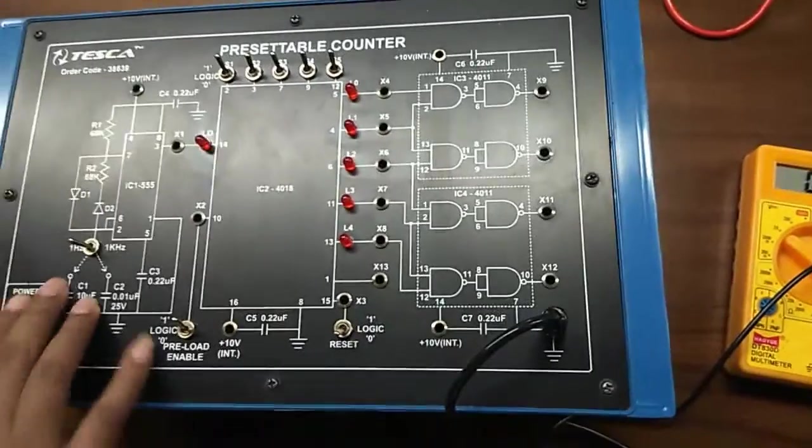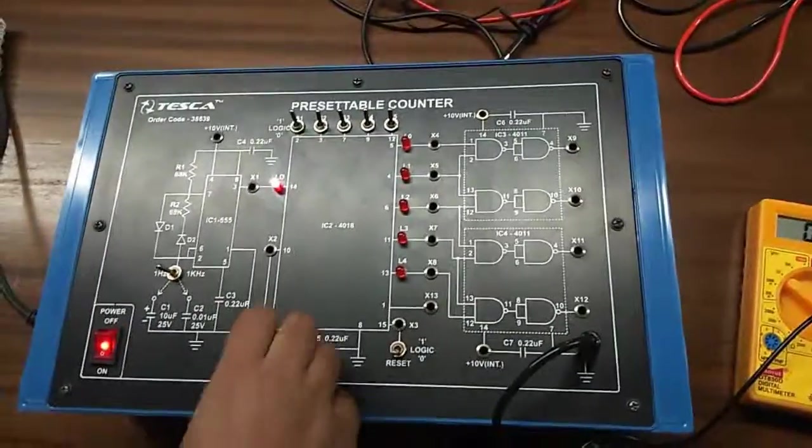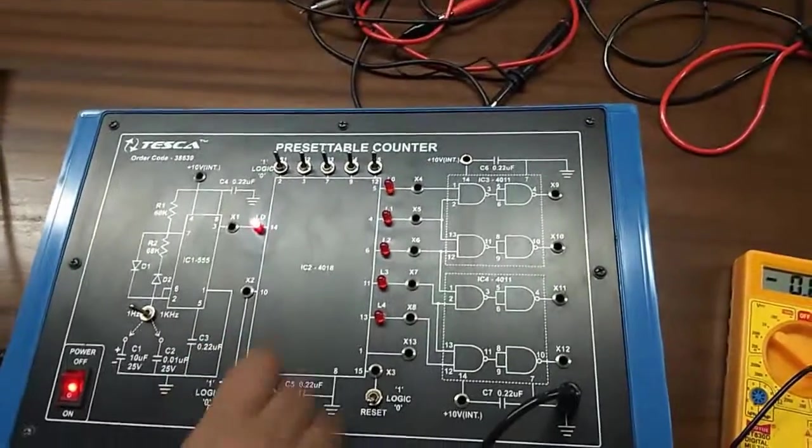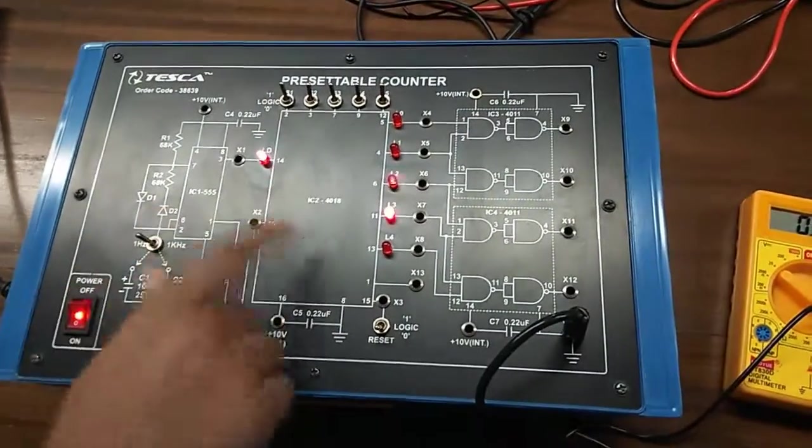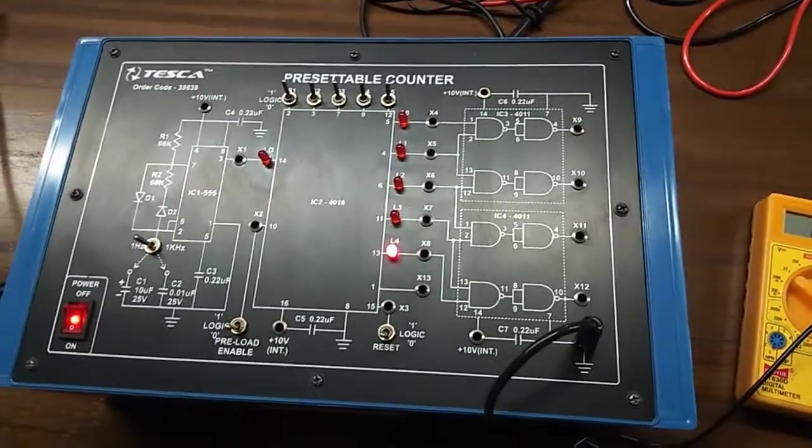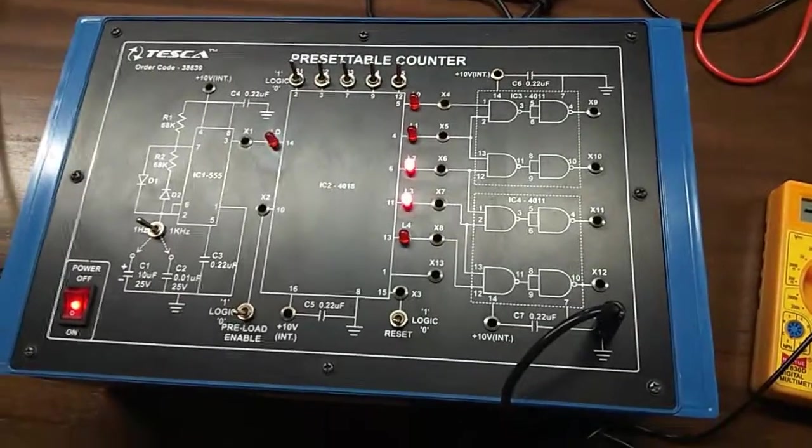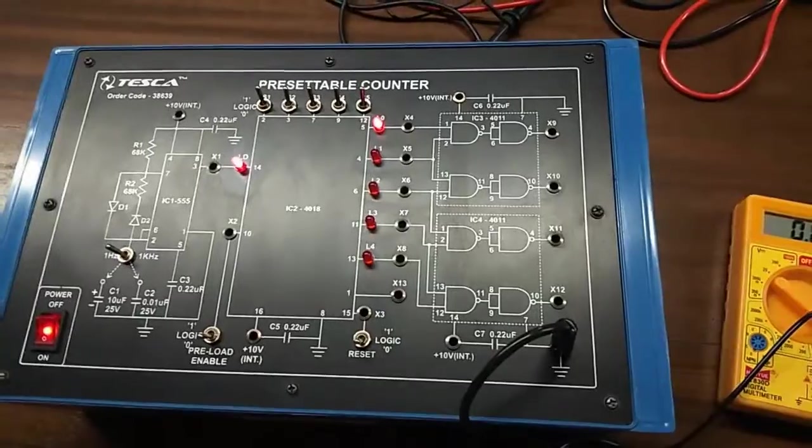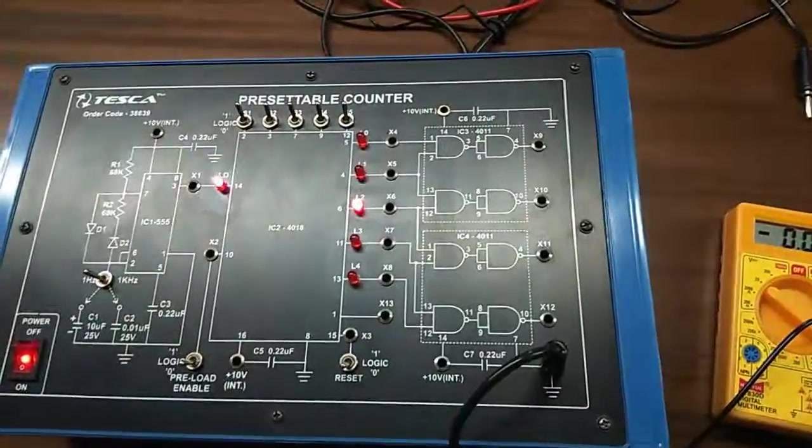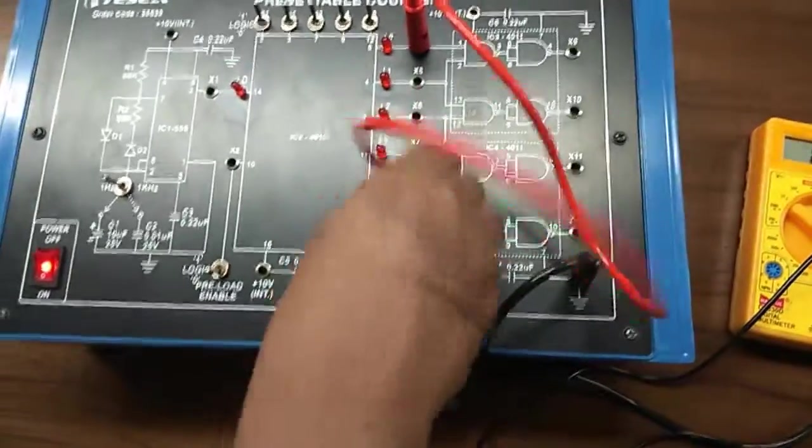Now change the preload to 0 and see that the counting starts. You can see here, this counter is now connected for divide by 2 function by shorting X4 and X13.